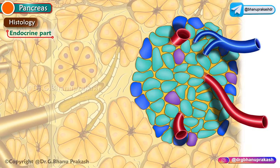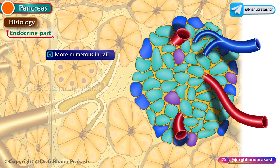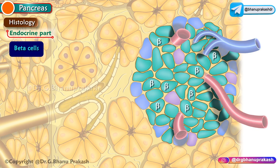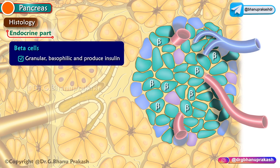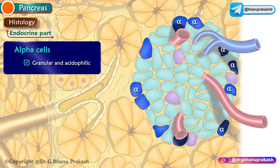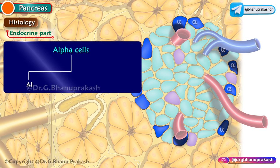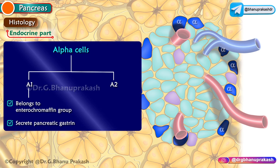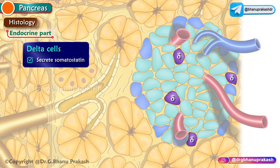The endocrine part is made up of the islets of Langerhans, which are small isolated masses of cells distributed throughout the pancreas, more numerous in the tail. The most important cell type are beta cells, approximately 80%, which are granular and basophilic and produce insulin, helping in utilization of sugar by the cells. Alpha cells comprise approximately 20% and are granular and acidophilic; A1 cells belong to the enterochromaffin group and secrete pancreatic gastrin, while A2 cells secrete glucagon. Somatostatin is another hormone produced by the islets.